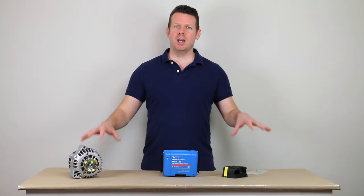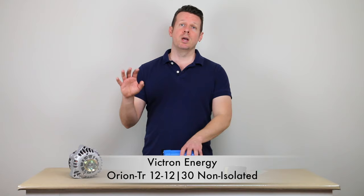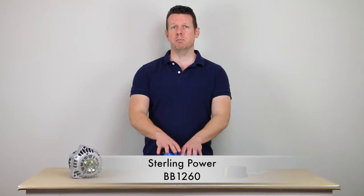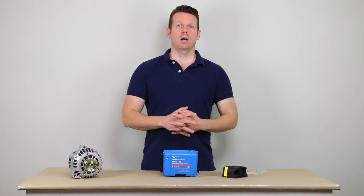So the chargers, if you move to a Victron Orion charger like this, or a BB-1260 from Sterling, that's a 60 amp charger that's twice as big as the Victron. Of course, you could use two of these right next to each other alternator to get 60 amps, but they are going to regulate.